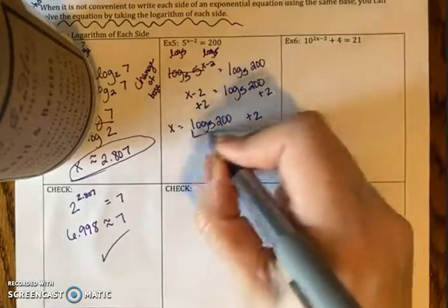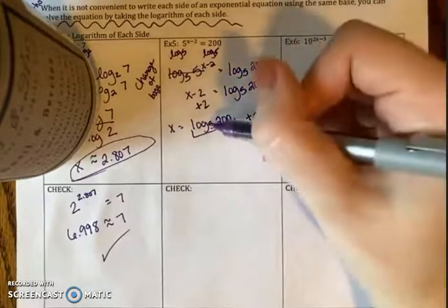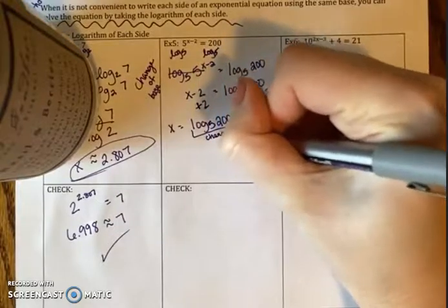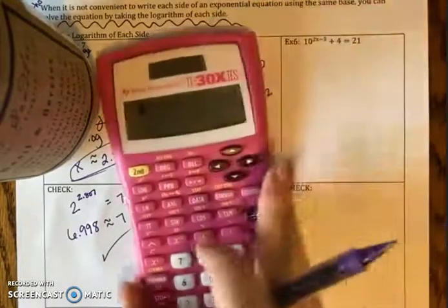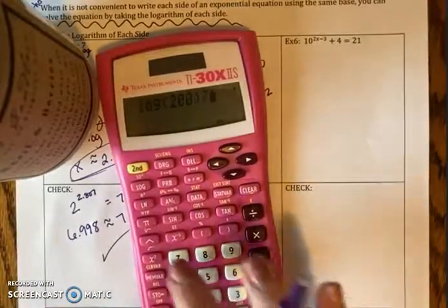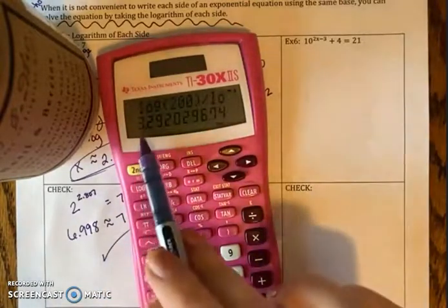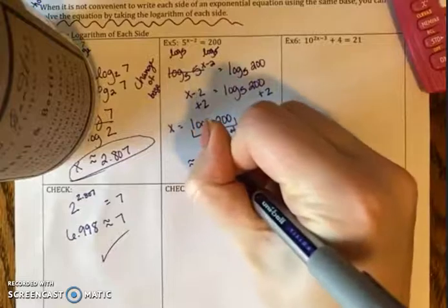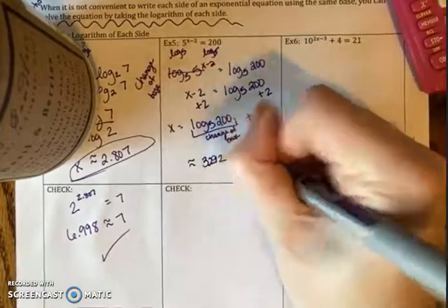What you're going to have to do is find out what log base 5 of 200 is. We've already established it's not some nice number, so I'm going to have to use the change of base formula again. Change of base would look like log(200) divided by log(5). So I have approximately 3.292.